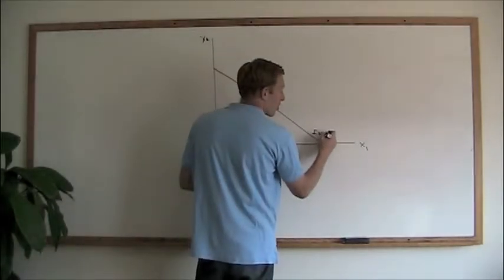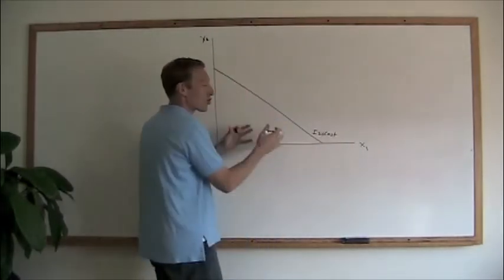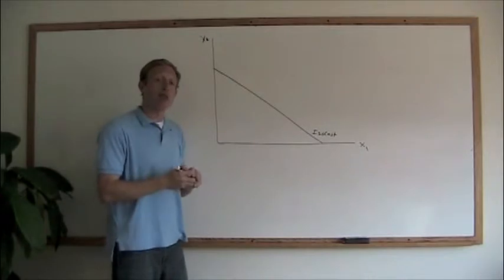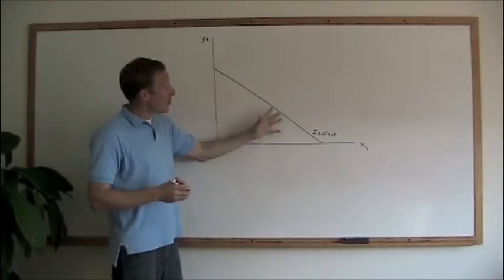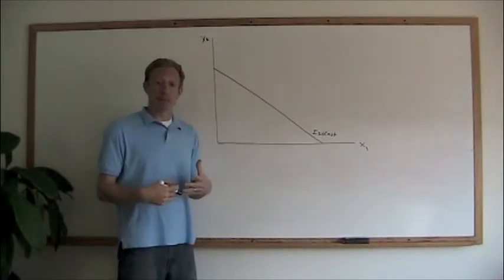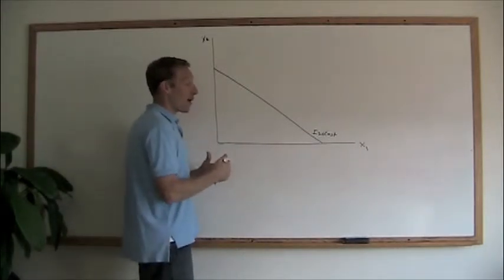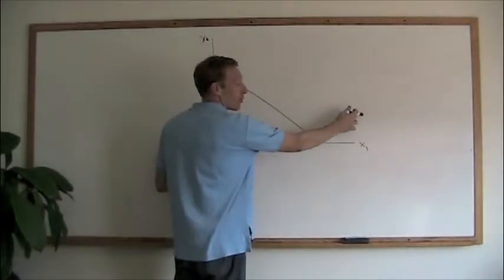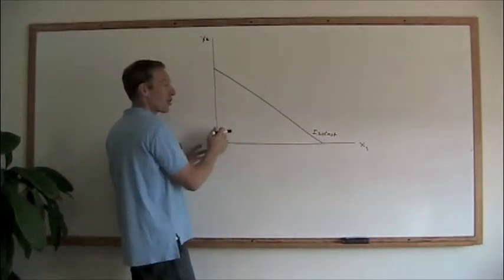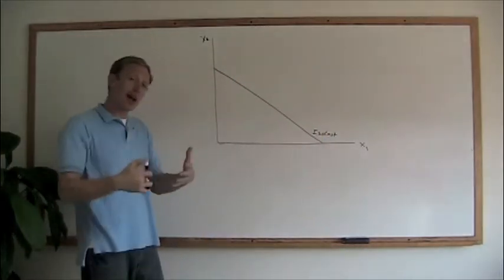So we have our isocost and we have to make trade-offs between X1 and X2, how much of each one of those we produce within this cost containment. Now if we have more to spend, the isocost will be out further to the right. If we have less to spend, it'll be further in towards the origin. But we'll always have these parallel lines, these isocost lines.